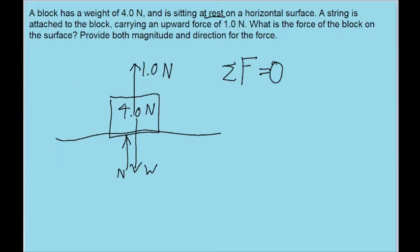So first I'm going to define a coordinate system. I'll say that upwards is positive, and then let's add the forces. So there are three different forces on the block. There is the upward force from the string, the 1.0 newtons. Then in the negative direction, because it's pointing downwards, there is the weight of the block.